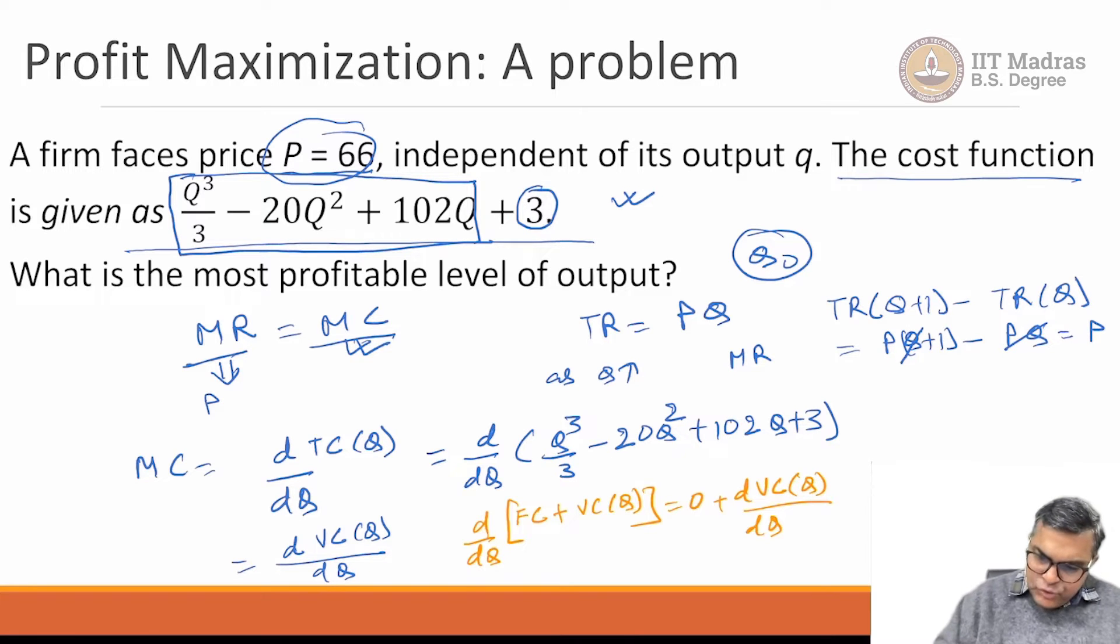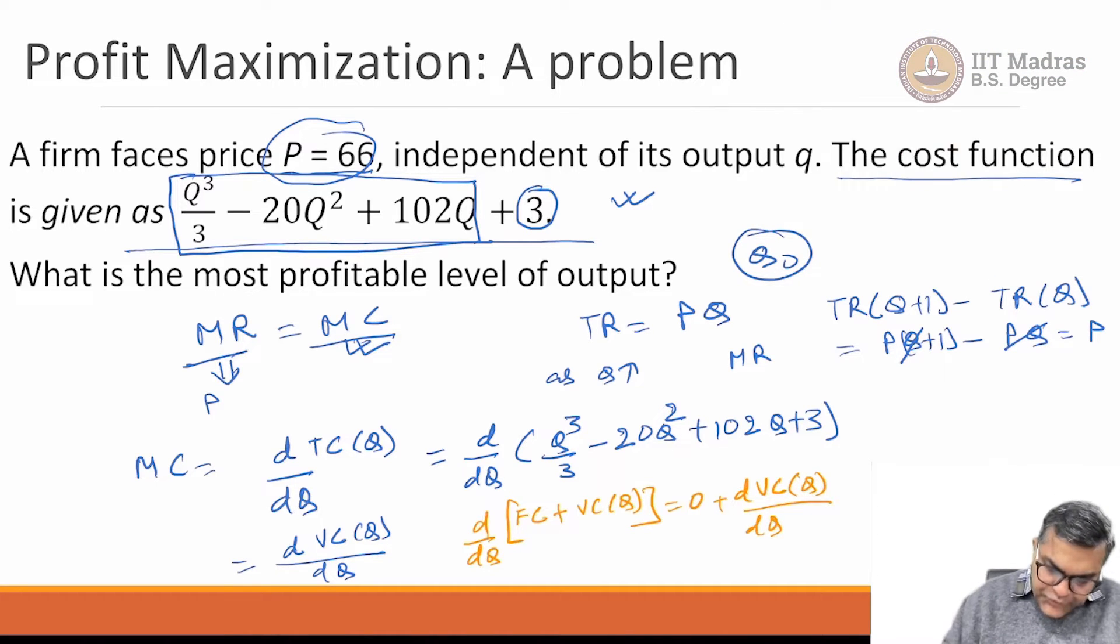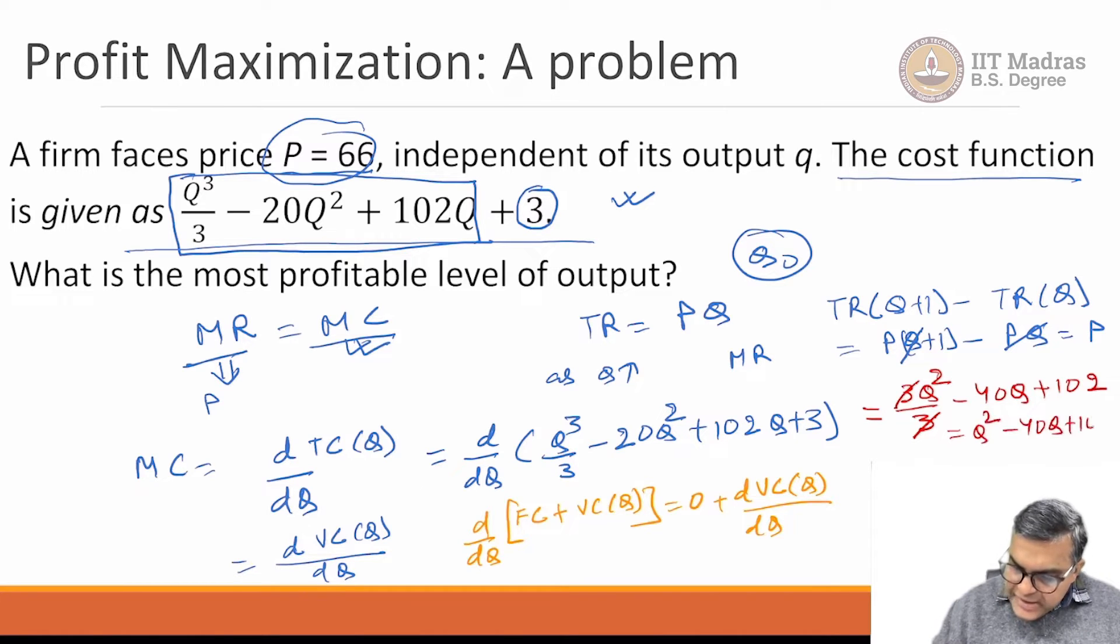Let us differentiate, and rather than going to the next page, we can just differentiate right here. If you differentiate this, what are you going to get? This is going to be 3q² divided by 3 minus 40q plus 102. This 3, 3 will get cancelled. You are left with q² minus 40q plus 102.